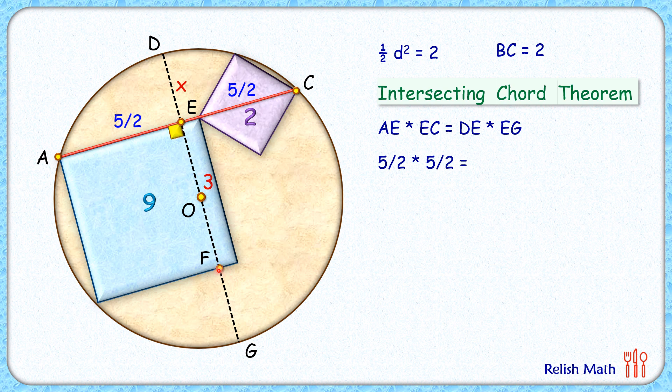And by symmetry, FG will be x centimeter. So putting values here, it will be x times 3 plus x.